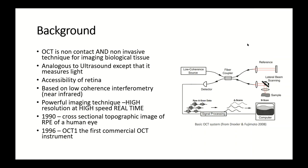Here you can see a basic illustration of the OCT principles. A low-coherent source of light is emitted and then split by a beam splitter into a reference beam and a probing beam. The probing beam is directed towards the retina, and when the light reflects back it passes to the detector. Similarly, the reflected light from the reference beam is collected, and all information is then stored and analyzed in the computer.